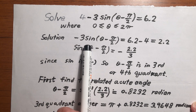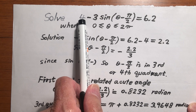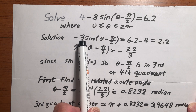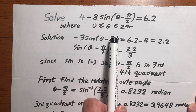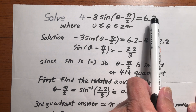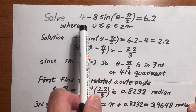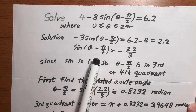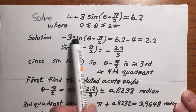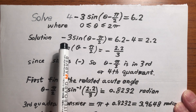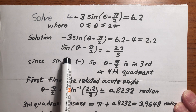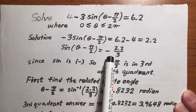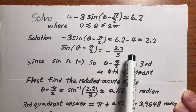The first step is to move the four to the right-hand side. So minus three sine of (theta minus pi over two) equals 6.2 minus four, which is 2.2. Then the next step is to divide this equation by negative three, so you get sine of (theta minus pi over two) equals negative 2.2 over 3.